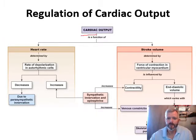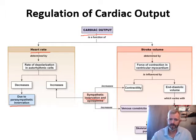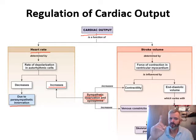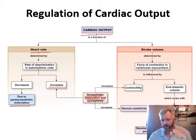Here is how we regulate cardiac output. We've already looked at autorhythmic cells — those are controlled by the parasympathetic or sympathetic nervous system, which controls the rate of depolarization from the autorhythmic cells and thereby controls heart rate. For stroke volume, there are several factors controlling how much blood is pumped out per beat — every time the ventricle contracts, how much blood is being pushed out.